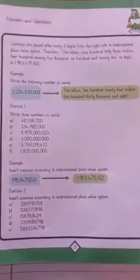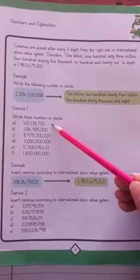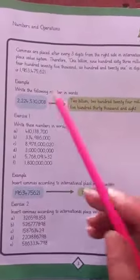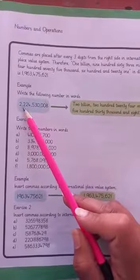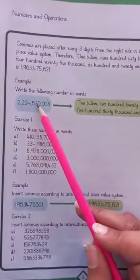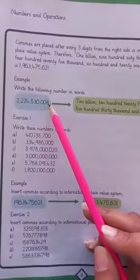You have written numbers; now write them in words form. Let's do the first example: 2,224,530,008.